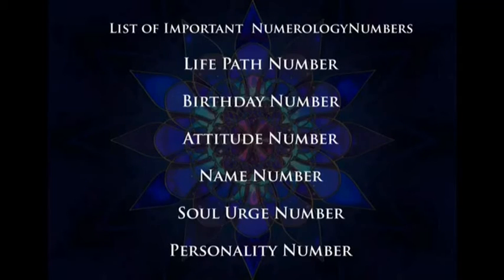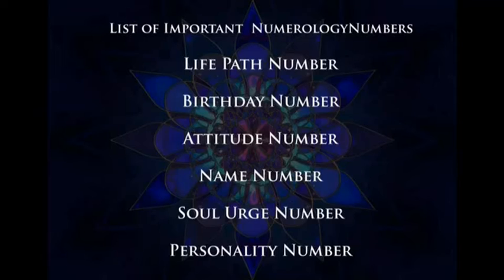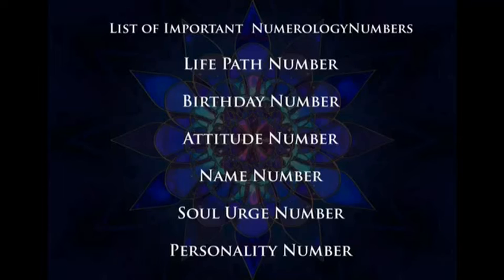Here again is the list of important numerology numbers: the life path number, which is the most important; then the birthday number, name number, soul urge, personality, and attitude numbers. You need to find out all these numbers for yourself and for your partner, and then do the matchmaking. Now it is time for a real-life relationship analysis — let us find out about a long-lasting celebrity marriage and what their numbers say.